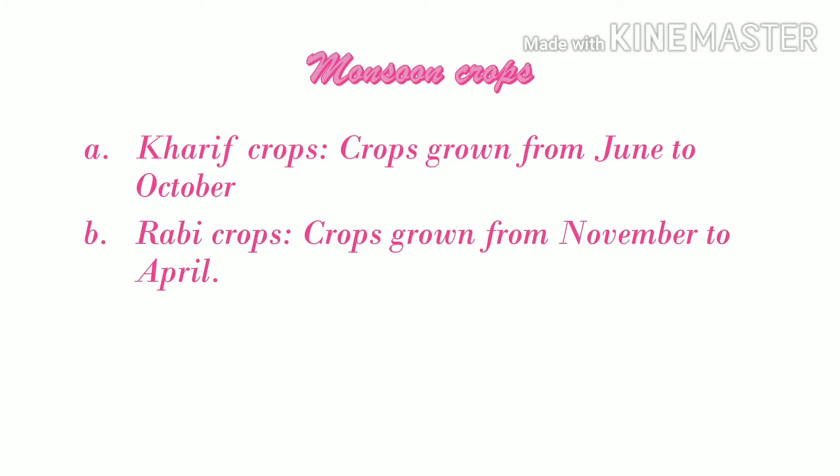Examples of Rabi crops are wheat, oat, chickpeas, mustard, almond, and broccoli.